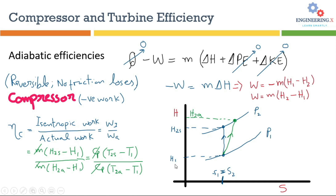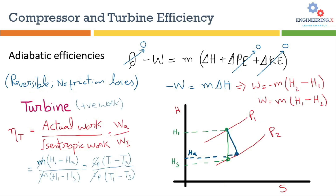Now let's move to the case of a turbine. We will use the same strategy using the first law of thermodynamics to derive the work equation for a turbine. The only difference is that turbine work done is positive, because by thermodynamic convention the work is produced by the system. The work equation for a turbine is: W equals mass flow rate times (enthalpy at point 1 minus enthalpy at point 2).